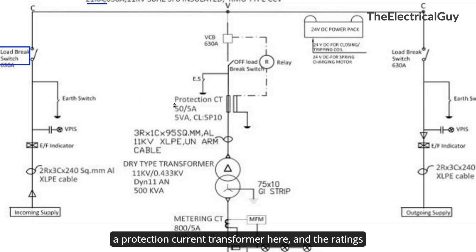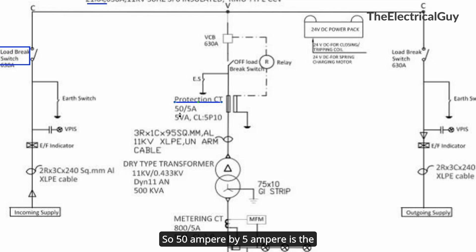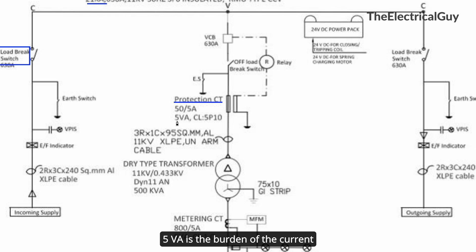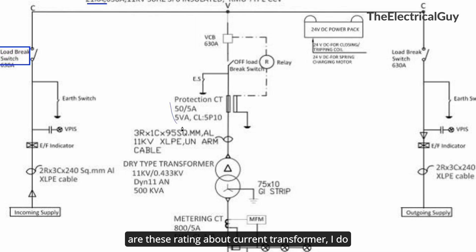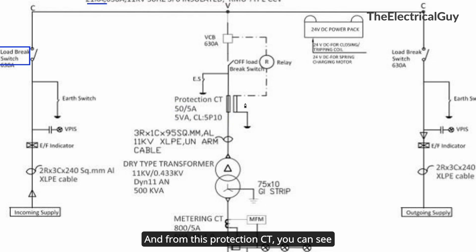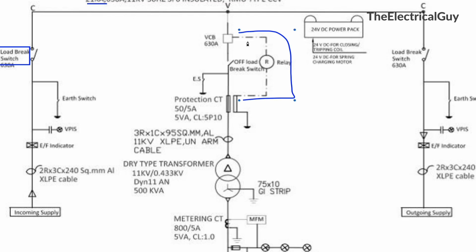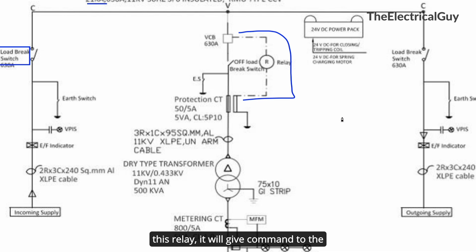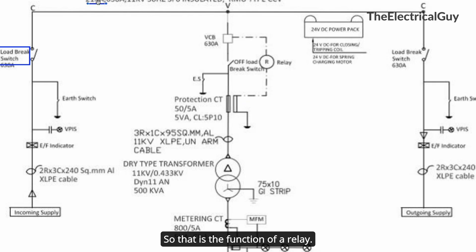Then we have a protection current transformer. The ratings are: 50 ampere by 5 ampere, 5 VA burden, and class 5P10, which is a protection class. If you are unsure about current transformer ratings, I have a dedicated master class on current transformers — link is in the description. From this protection CT, via a relay, a command is sent to the circuit breaker. If the relay detects something wrong, it will command the breaker to trip, thereby protecting the system.